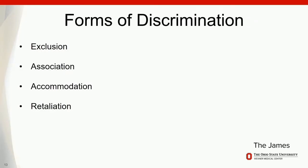Discrimination comes in a variety of forms. We'll talk about some examples that are exclusion, some that are based on association with an individual who has a disability, based on accommodations, and based on retaliation having disclosed your disability on how you are treated.